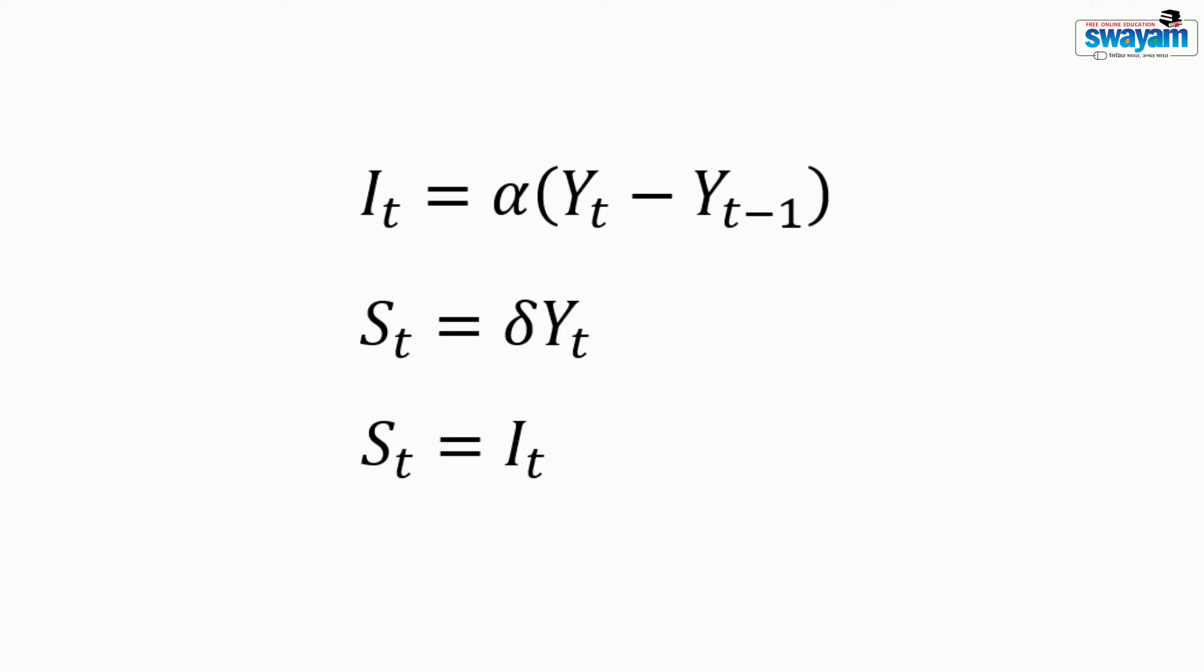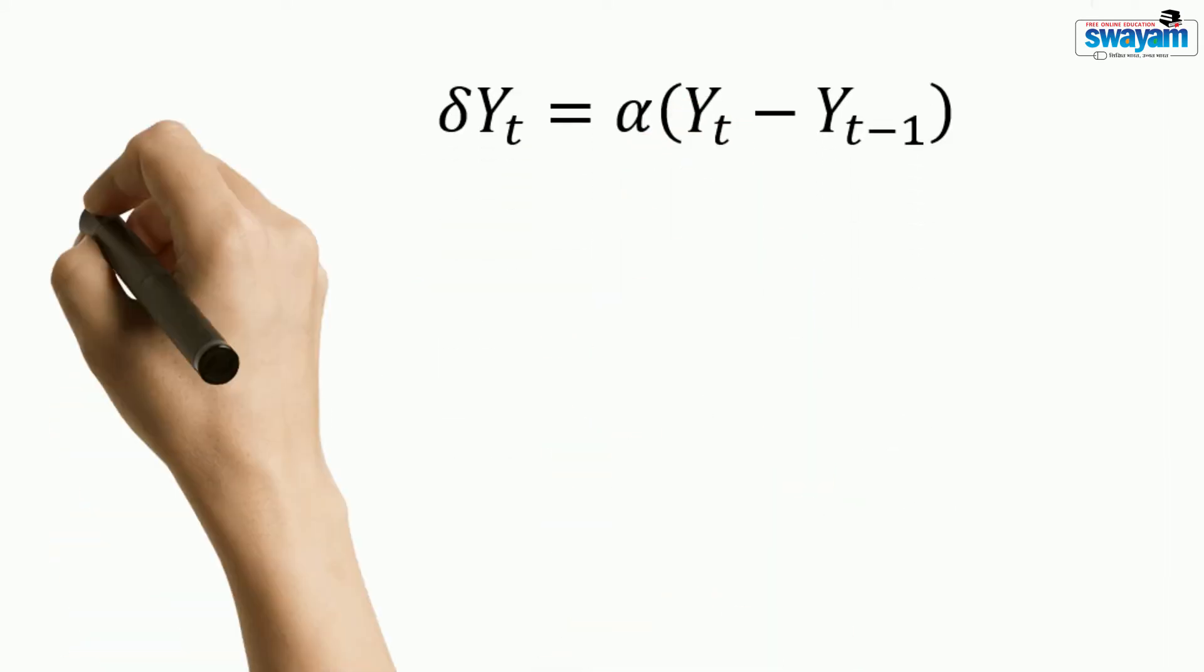Let us now try to find the time path of growth of income. That is, we have to find the value of YT. Let us substitute these two equations in the equilibrium equation. This is the result. Simplifying, we get this result.